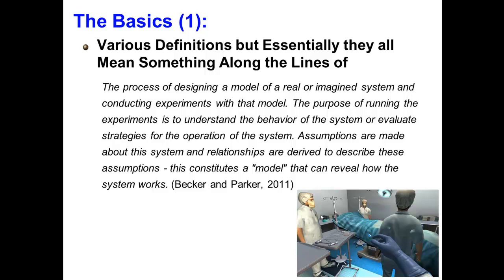For computer-based simulation, you need a precise and unambiguous description of the model you wish to implement — you need to know how to describe your model in a form that can be turned into a computer program. Computer-based simulations can be grouped into two main types: experimental simulations, which seek to answer some question, and experiential simulations, which provide an environment with which one or more users can interact. For this course, we'll be dealing with experiential simulations.